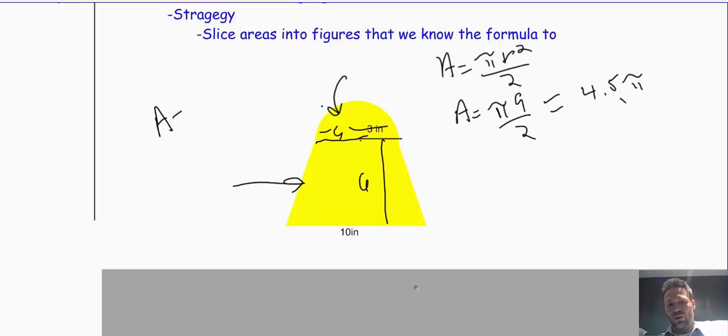Area equals (6 + 10) over 2 times the height, which is 6. 6 plus 10 is 16. 16 divided by 2 is 8. So I got 8 times 6 in the end, and 6 times 8 is 48.